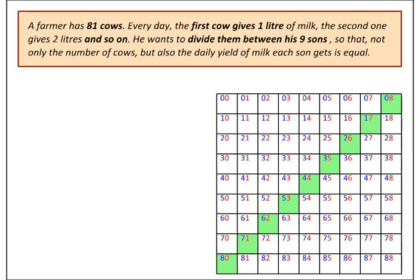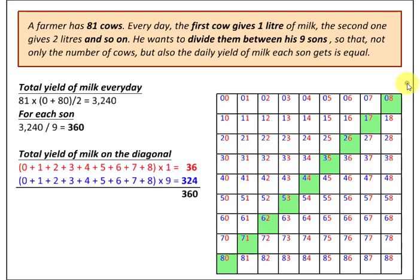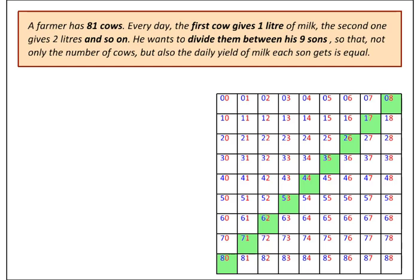How much milk does he get? There are 81 cows: the first gives 0 litres and the last gives 80, so the average is (0 + 80) / 2 = 40, multiplied by 81 gives 3,240 litres total, divided by 9 sons gives 360 litres each per day. Checking the diagonal: the red digits run from 0 to 8 in the units place, summing to 36; the blue digits also run from 0 to 8 but in the nines place, giving 36 × 9 = 324. Together: 36 + 324 = 360, as required.